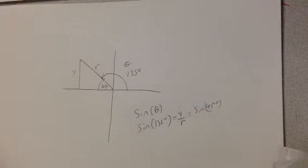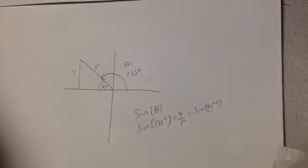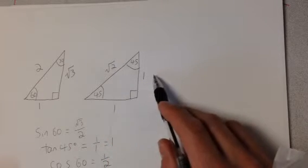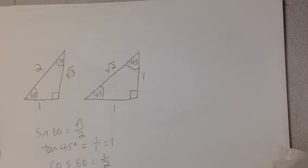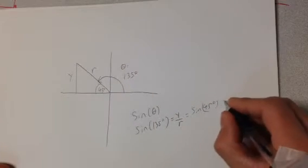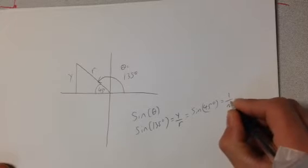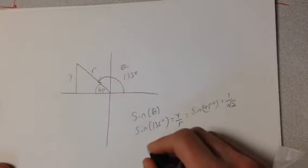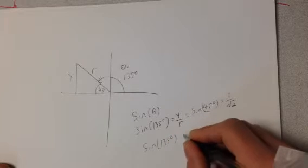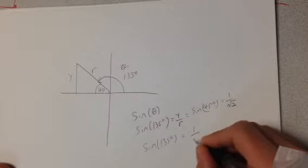And remember from our special triangle, here's 45 degrees, the opposite is 1, and the hypotenuse is root 2. So the sine of 45 degrees is 1 over root 2. That makes the sine of 135 degrees also equal to 1 over root 2.